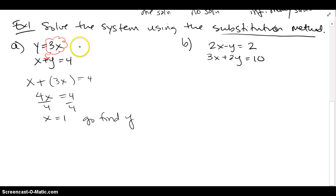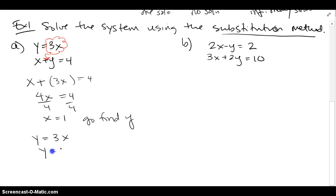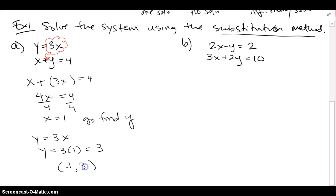Now I have to go find y, which means going back into either equation 1 or 2 — it doesn't matter. I'm going to go back into the easier one, and it looks like y is going to be 3. So these two lines do intersect — it's a consistent system and they meet at the ordered pair (1, 3).